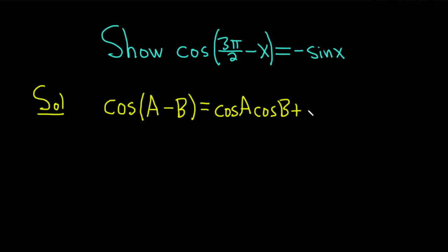So because we have a minus, we put a plus here. It's a nice memorization trick. Plus sine of a, sine of b. If you had cosine of a plus b, it would be exactly the same, except you would have a minus sign on the right-hand side.